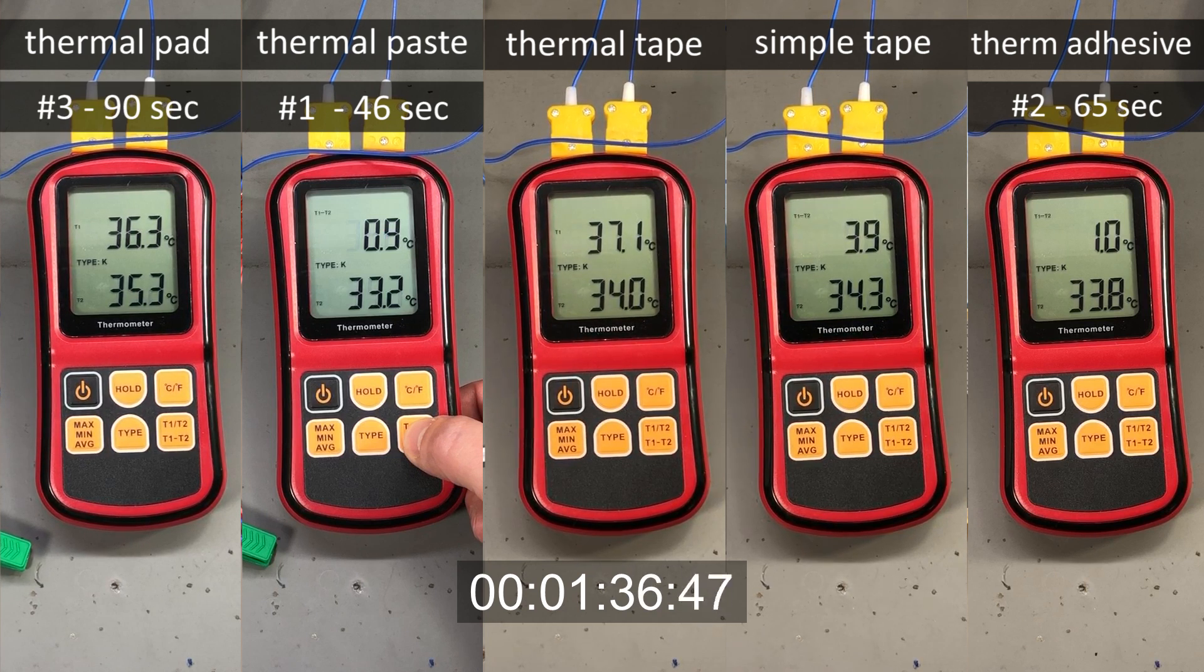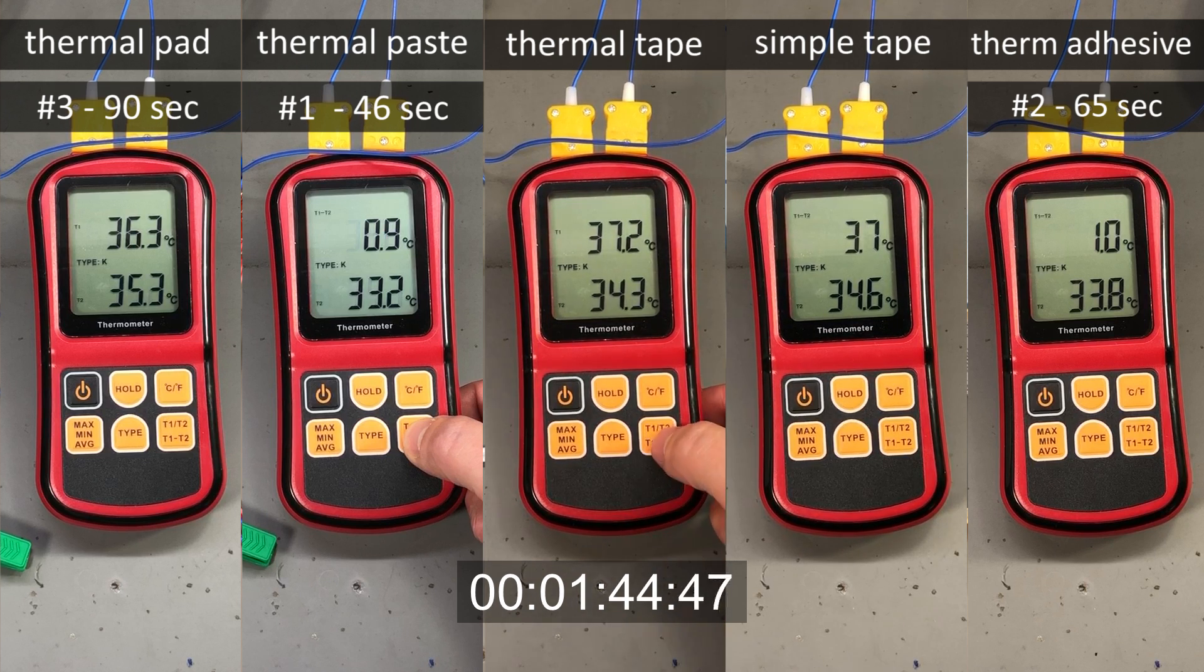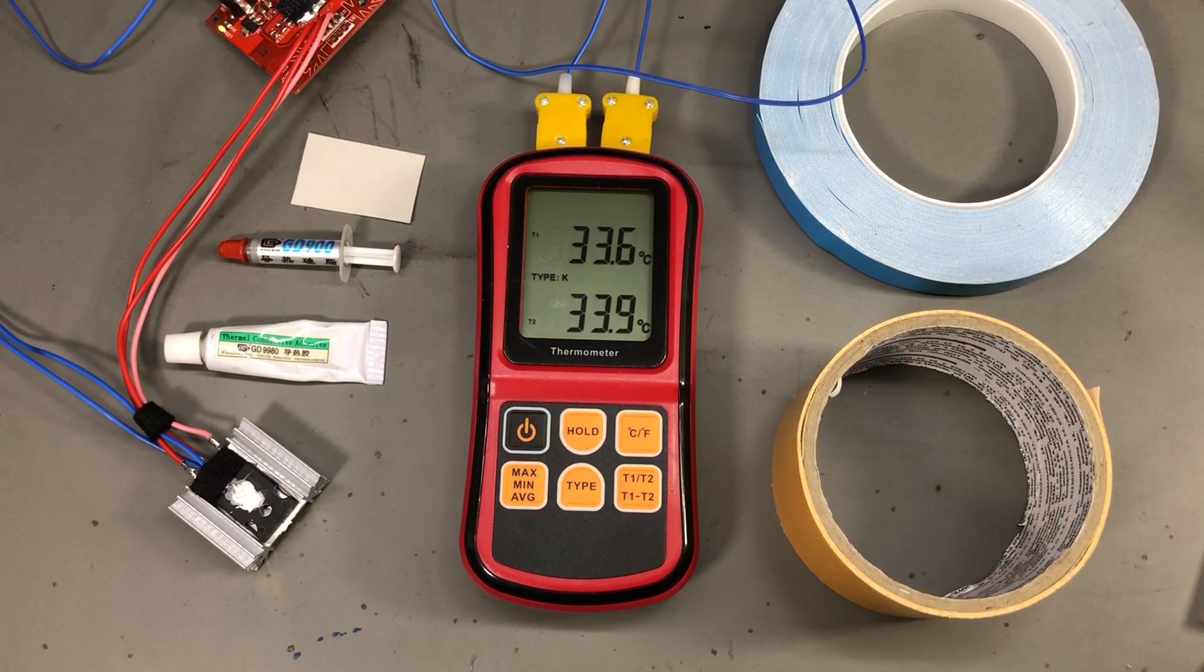You could say that the thermal adhesive tape was slightly better, but due to the measurement method I used I can't consider that small difference relevant. So my conclusion is to avoid using that thermally conductive double-sided tape unless you don't really need efficient cooling. As we saw in the tests, it's not conclusively better than just plain simple adhesive tape.